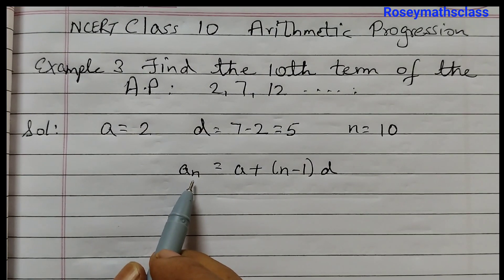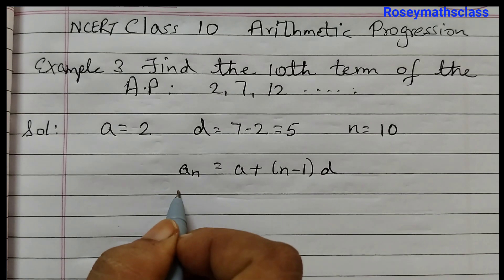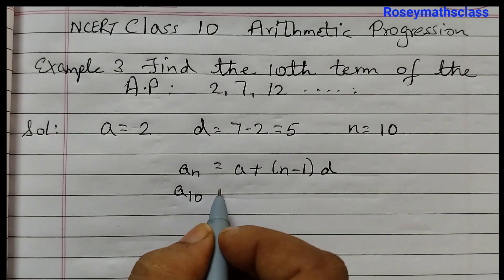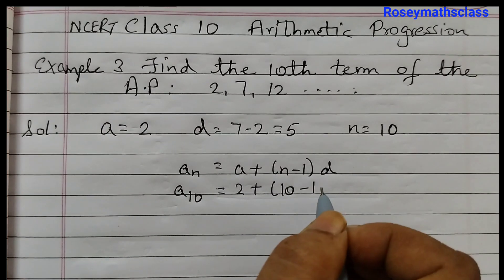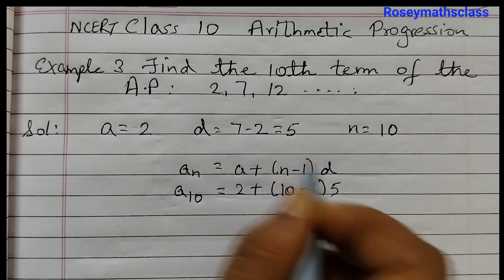where AN is the Nth term. So in this case, the 10th term equals A is 2 plus (10 minus 1) times D is 5.